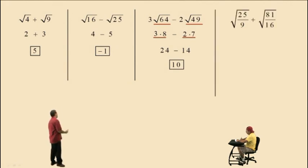Let's go to this next problem. Here we have the square root of 25 ninths plus the square root of 81 sixteenths. Well, you have a fraction underneath the radical sign. What's the square root of 25, Charlie? 5. And what's the square root of 9? 3. So the square root of 25 ninths is actually 5 thirds.